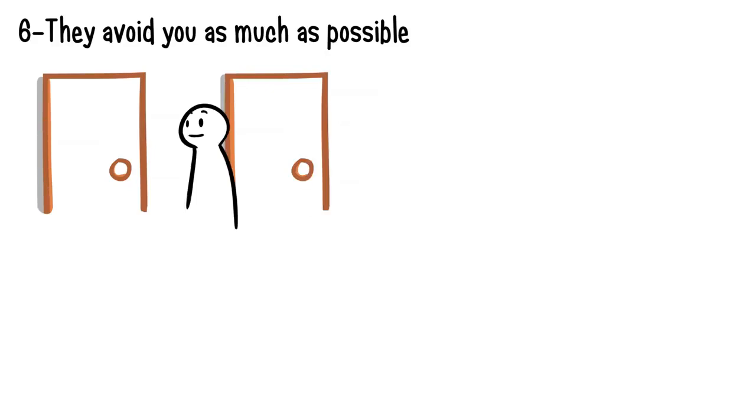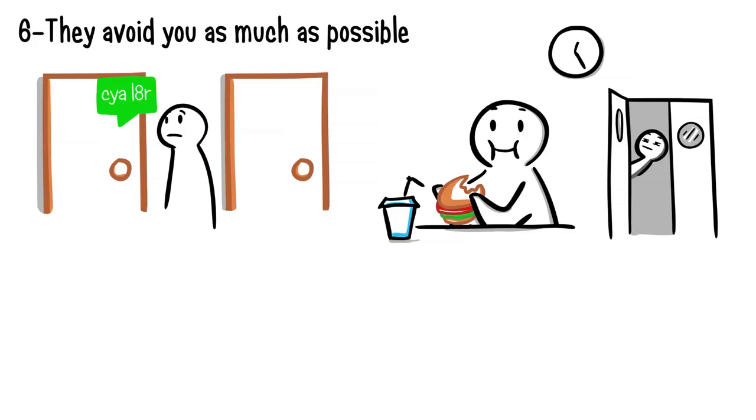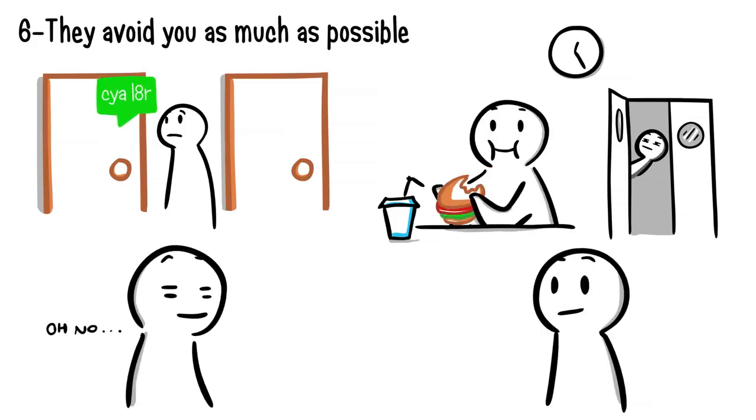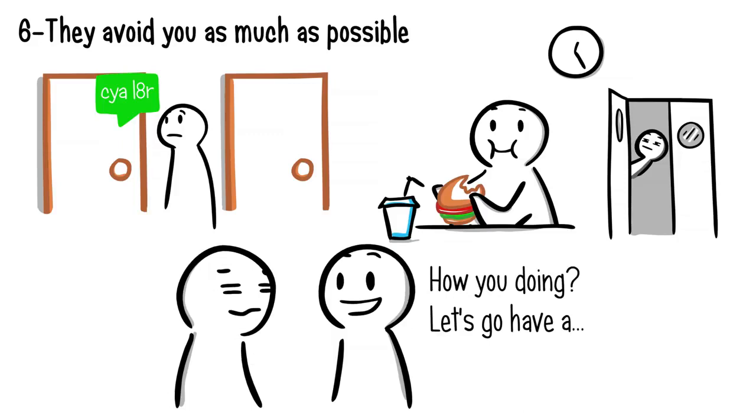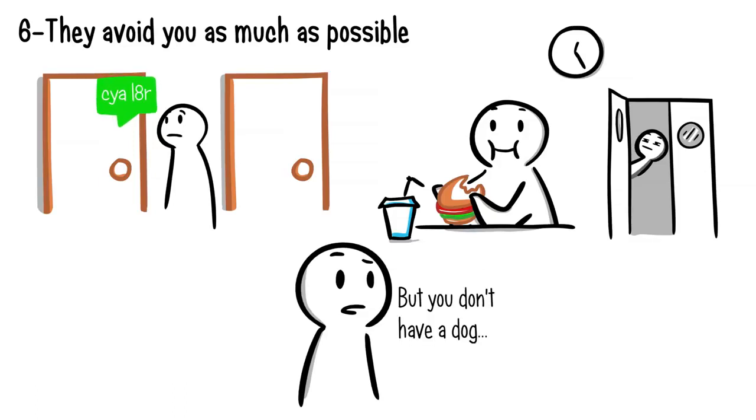Number six. They avoid you as much as possible. Do they live or work in close proximity to you, but limit communication to emails or text messages? When someone secretly dislikes you, they will do whatever it takes to have minimum contact with you. It's especially a sign if they find out your schedule just to avoid you during your lunch hours or time you need to occupy the same space. And when you do end up bumping into one another, they'll always have an excuse ready at hand to avoid seeing you again.